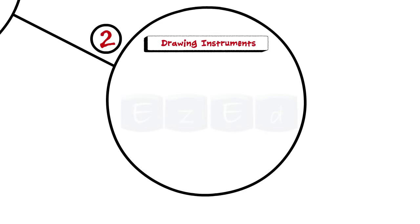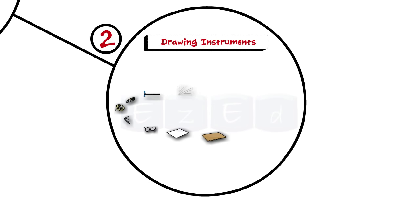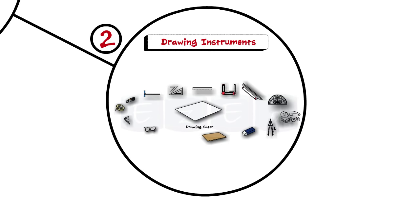Next we have seen different drawing instruments used in engineering drawing such as drawing board, drawing paper, pins, clips or adhesive tapes, pencils, T-square, set square, scale, drafter, roller scale, protractor, French curves, compass and eraser, and their uses.